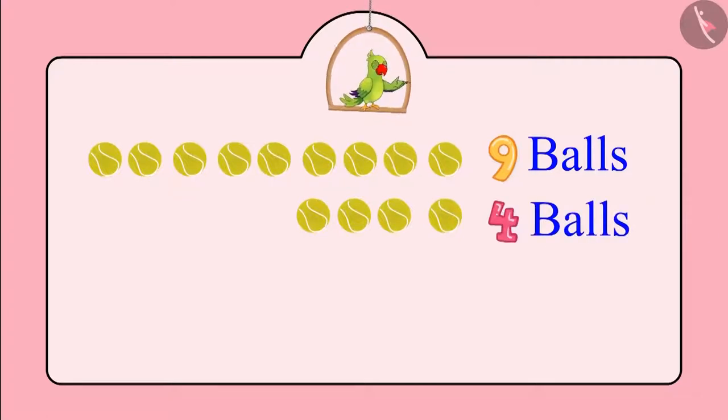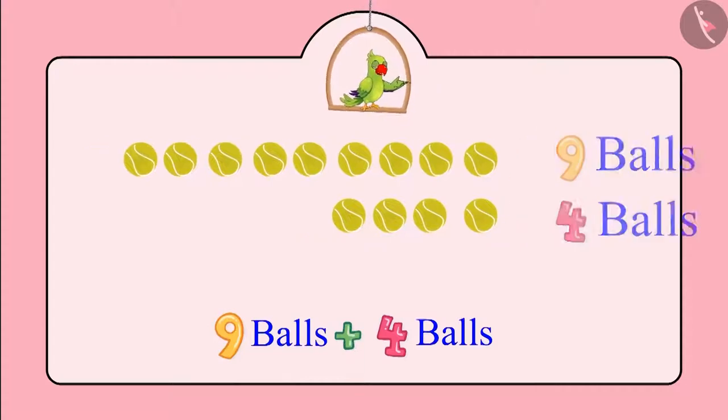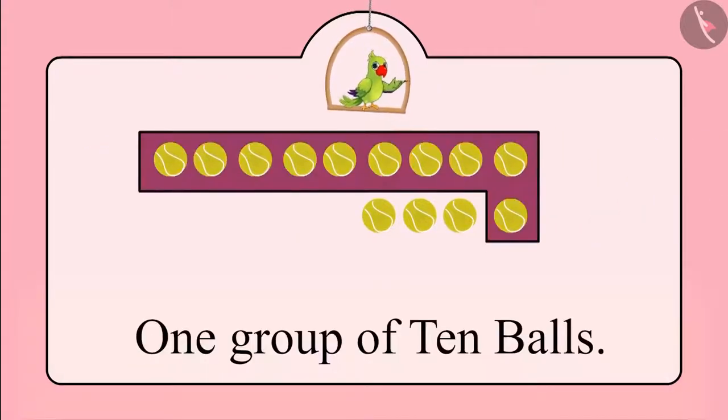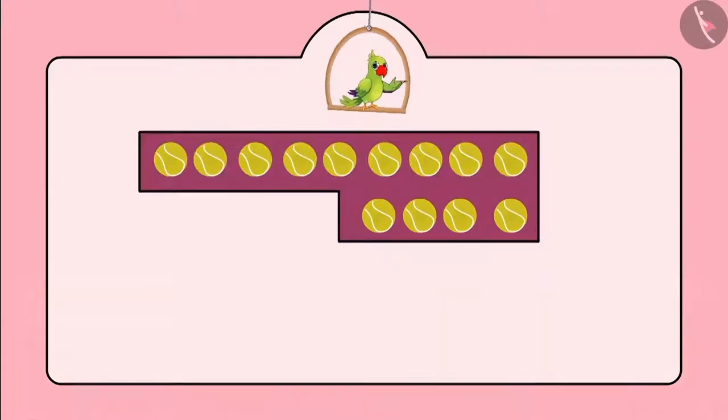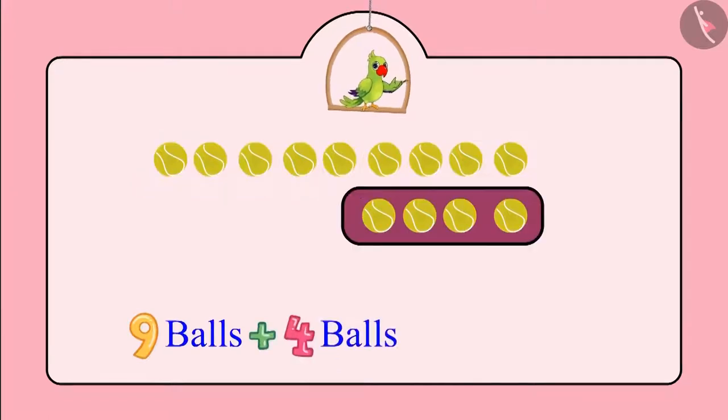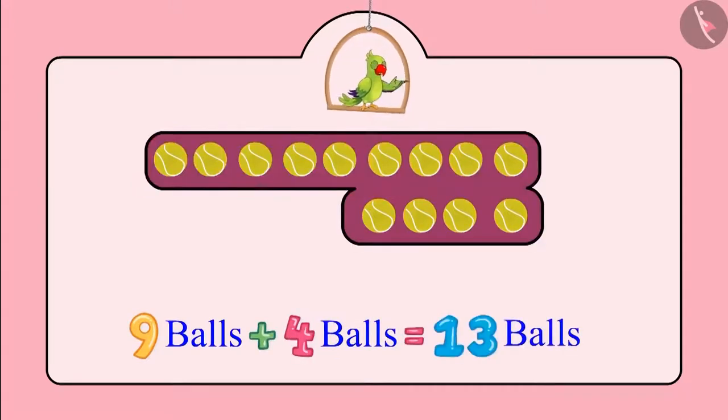This means that all the balls together make a group of 10 balls and three more balls. This means there are a total of 13 balls. So children, nine balls added to four more balls make a total of 13 balls.